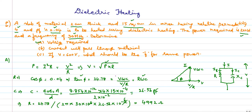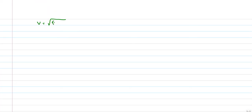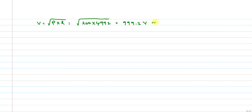Now we can find voltage. V = √(P·R) = √(200 × 4992) = √(998400) ≈ 999.2 volts, which we approximate as 1000 volts. This is the answer to part (a).